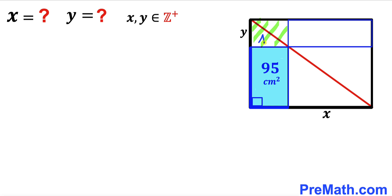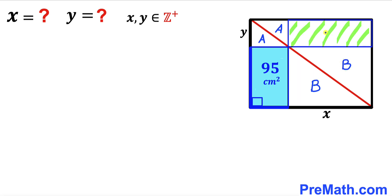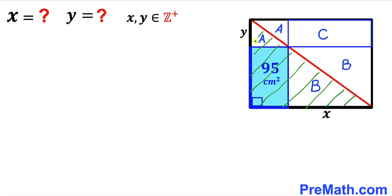Let's assume the area of this first region is uppercase A. Now let's focus on another rectangle — its diagonal divides its area into two equal parts. Let's assume that area is uppercase B, so the other half is uppercase B as well. And let's label the area of the next rectangle as uppercase C. We can observe that the area of this lower right triangle equals the area of this upper right triangle.